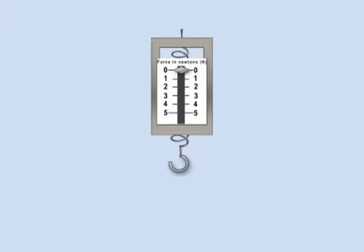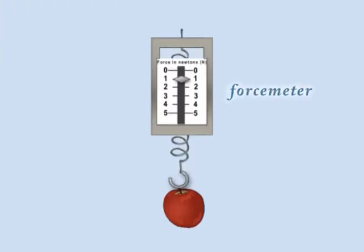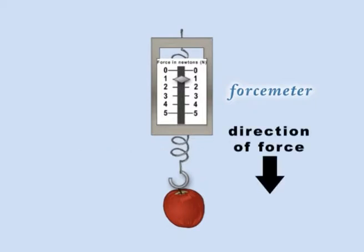The weight of an object can be measured using a force meter, made from a spring balance, while an arrow can be used to show the direction of the force.